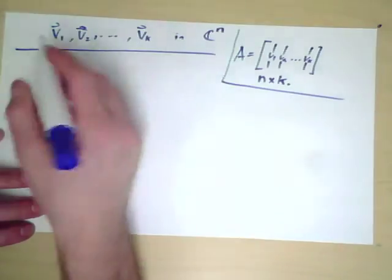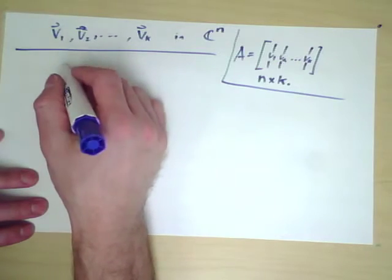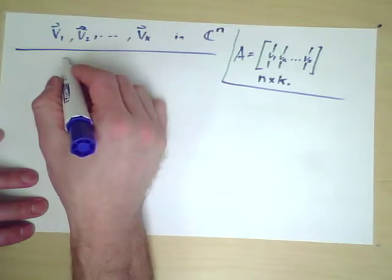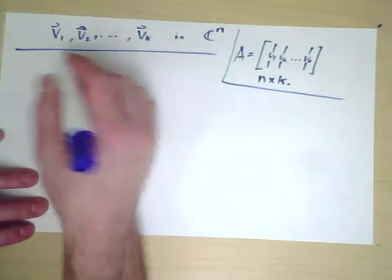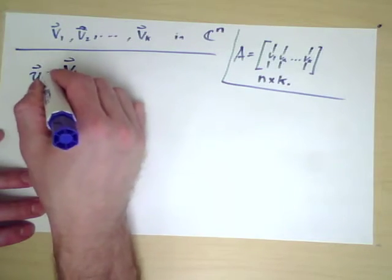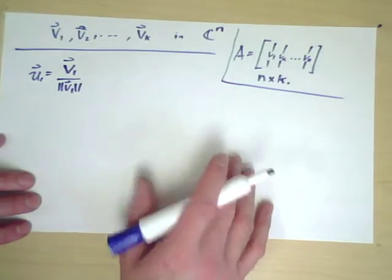So here's the process. First of all, take the first vector and divide it by its length. Let's call that U1. We now have our first new vector. Easy enough.